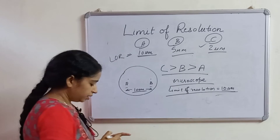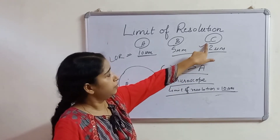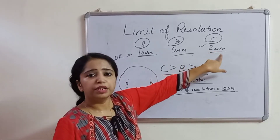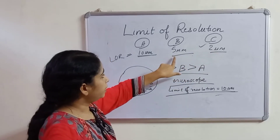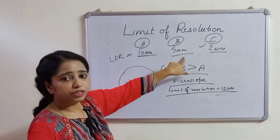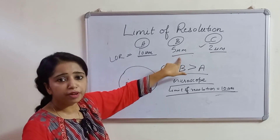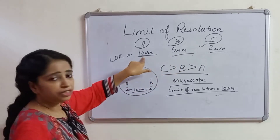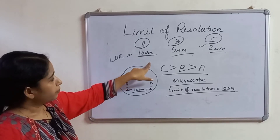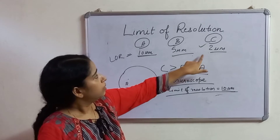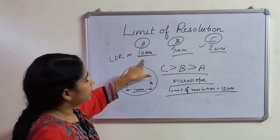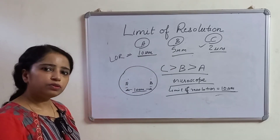C is the best because it can differentiate between two points on the specimen even if they are only 2 micrometers away. B can only distinguish between two points if they are at least 5 micrometers apart, and A can distinguish only if they are at least 10 micrometers apart. So the order is C is better than B, which is better than A. This tells us about the microscope's ability.